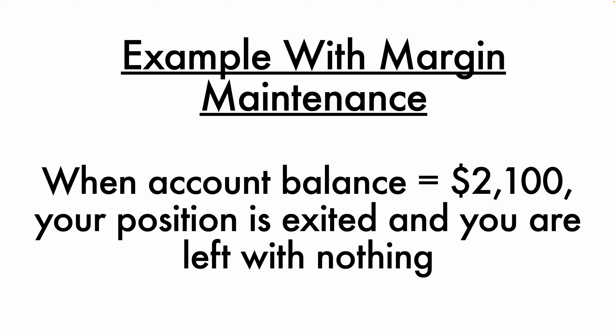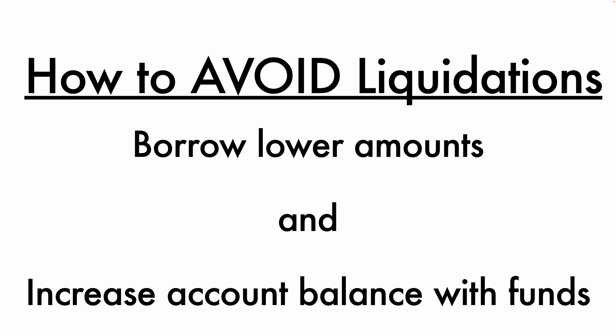If the value of your account balance becomes $2,100, your position is automatically exited. The $2,000 you borrowed will be returned to the exchange, and your account balance will be left with nothing due to the margin maintenance. The best way to avoid getting liquidated is by borrowing lower amounts, or if you've already entered a trade, you can put in more margin to increase your account balance.